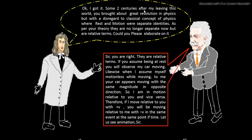Some two centuries after my leaving this world, you brought about a great revolution in physics, but with a disregard to the classical concept where rest and motion were separate identities. As per your theory, they are no longer separate but are relative terms. Could you please elaborate on it? All right — they are relative terms. If you assume being at rest, you will observe my car moving. Likewise, when I assume myself motionless while moving, to me your car appears moving with the same magnitude in the opposite direction. So I am in motion relative to you and vice versa.